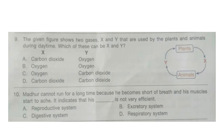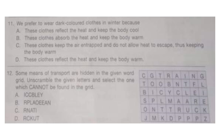Question 10: Madhur cannot run for a long time because he becomes short of breath and his muscles start to ache. This indicates that his dash is not very efficient. Look at the options and try to find out your answer. The correct answer is option D: Respiratory system.